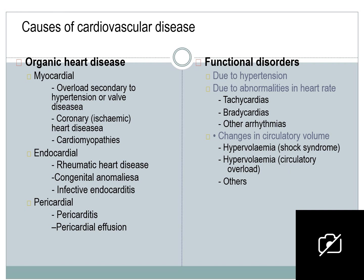Often only the drug history gives a clue to the nature of the cardiac illness. Causes of cardiovascular disease can be divided into organic heart disease and functional disorders. Organic heart disease includes myocardial overload secondary to hypertension, valvular disease, coronary ischemic heart disease, and cardiomyopathies. Endocardial causes include rheumatic heart disease, congenital anomalies, and infective endocarditis. Pericardial causes include pericarditis and pericardial effusion.